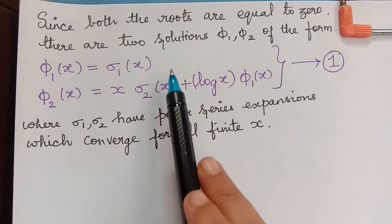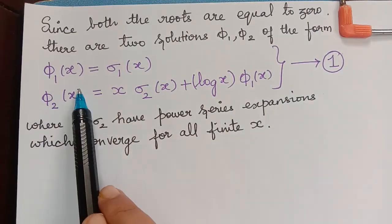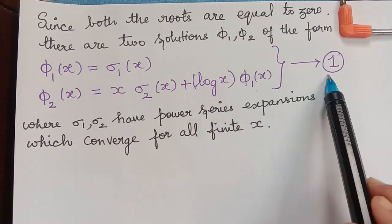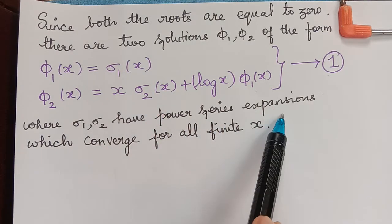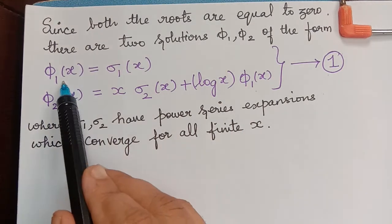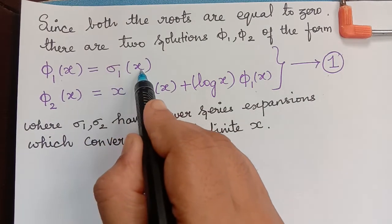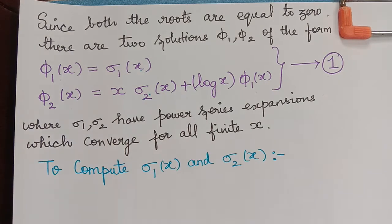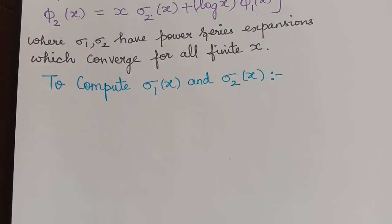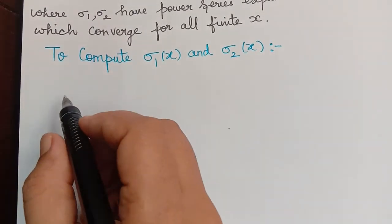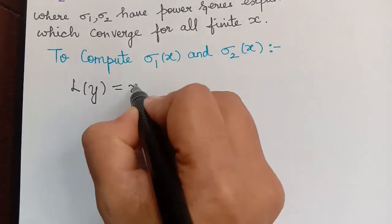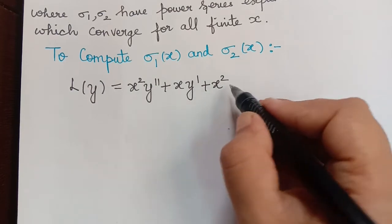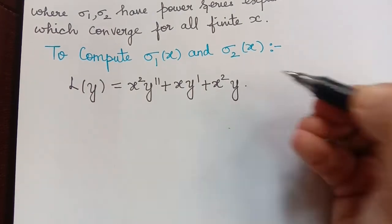Since both roots are equal to 0, the two solutions are phi1(x) equals sigma1(x) and phi2(x) equals x·sigma2(x) plus log(x)·phi1(x), marked as equation 1, where sigma1 and sigma2 have power series expansions convergent for all finite x. The Bessel equation with alpha equal to 0 becomes L(y) equals x squared y double dash plus x y dash plus x squared y equals 0.